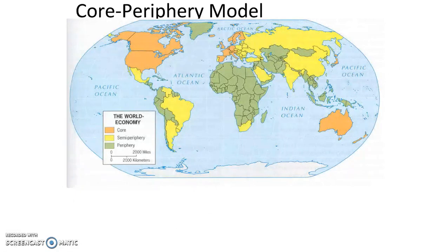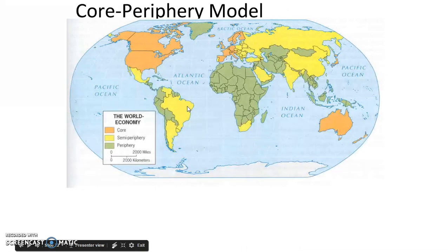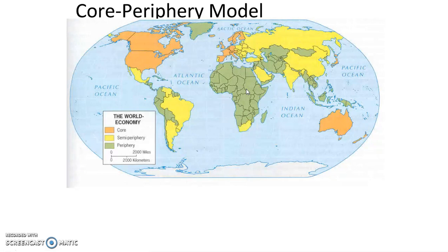Here we have our core periphery model. The orange represents the core: Anglo-America, Western Europe, Australia, Japan, and South Korea. Then we have our semi-periphery: Russia, Eastern Europe, China, India, Saudi Arabia and other oil-producing countries, South Africa, Brazil, Chile, and Mexico. And then we have our periphery countries, which often coincide with our LDC, DC, MDC match.